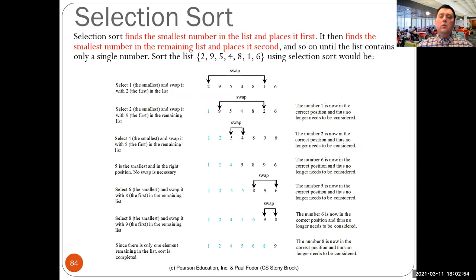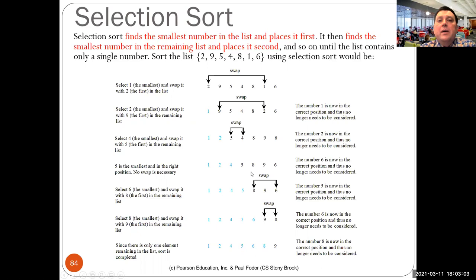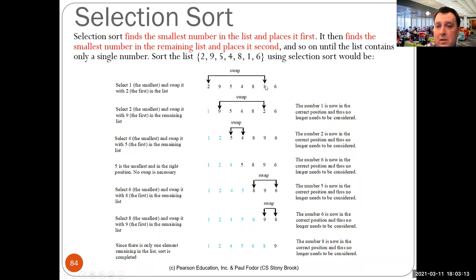Now two methods for sorting. The first is called selection sort. Selection sort finds the minimum element — the smallest element in the list — and puts it at the beginning by swapping the first element with the minimum. In this array the minimum is 1; we swap 1 with 2 and get the resulting array.